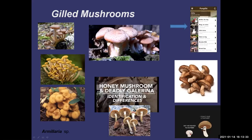Honey mushrooms are very common in the fall and tend to be very prolific — large bunches of them grow from dead logs. They're not quite a beginner mushroom because there is a poisonous look-alike called deadly Galerina, so you need to know the difference. This is where a spore print will save you: Galerina has a brown spore print, while honey mushrooms have a white spore print.